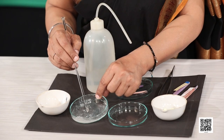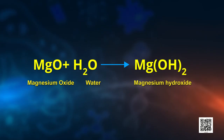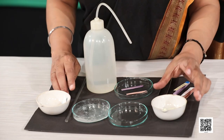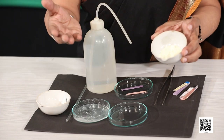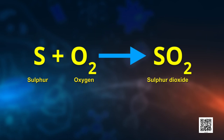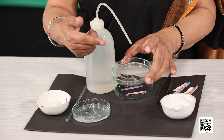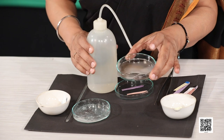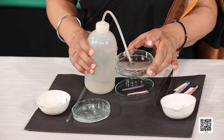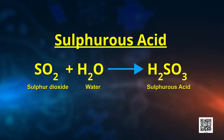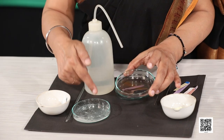Do you know the formula of the substance formed after mixing magnesium oxide with water? It is magnesium hydroxide. Here I had taken sulfur powder, burned it in air, collected sulfur dioxide, and dissolved it in a little water — so now I have sulfurous acid. These two resultant solutions are ready to be tested with both red and blue litmus paper.